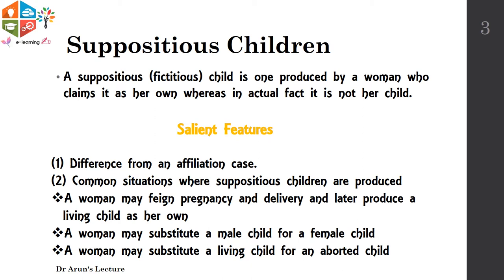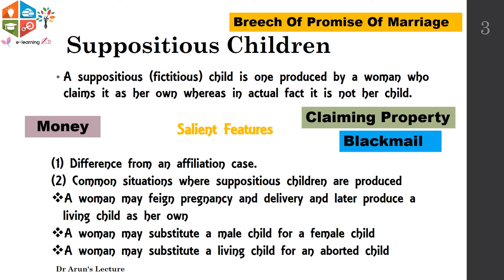A major objective for this sort of fraudulent act is: first, due to a breach in promise of marriage; second, for claiming property; third, as an act of blackmailing; and fourth, to extort money from the father.